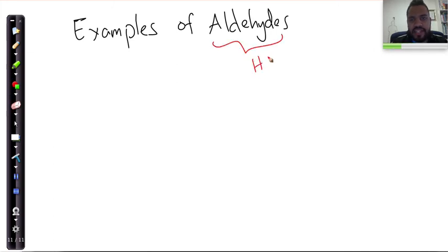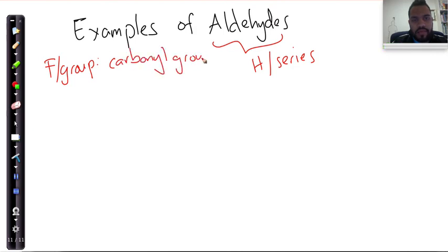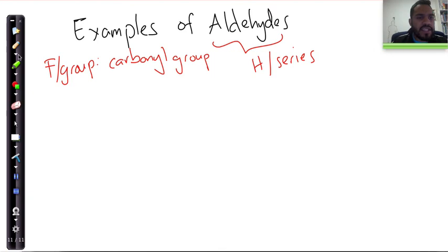Right, that's the H-series, and remember the functional group for this homologous series is the carbonyl group. Okay, so let's look at examples.